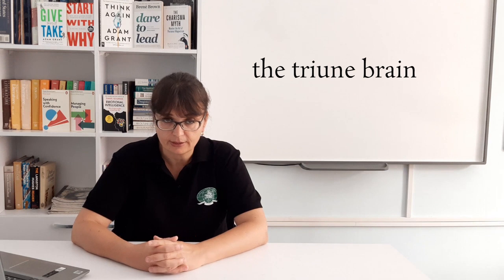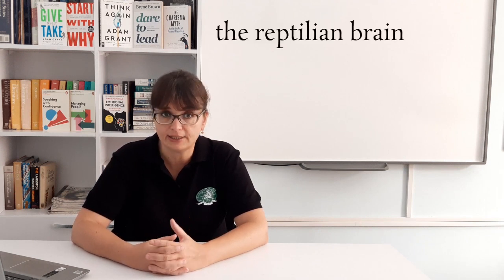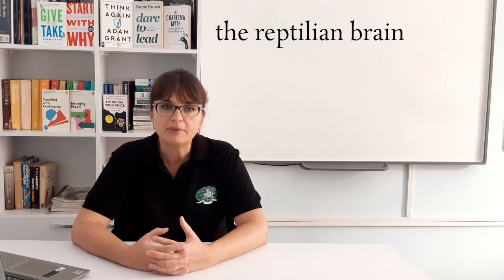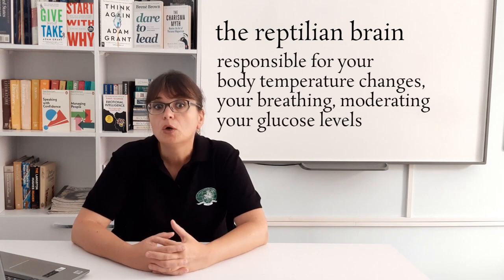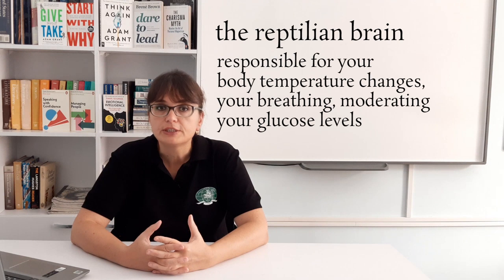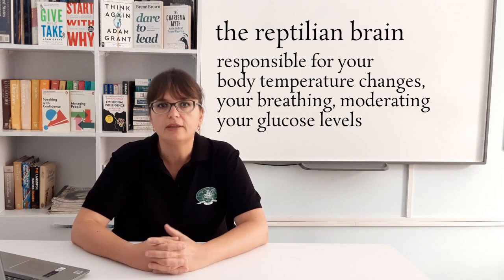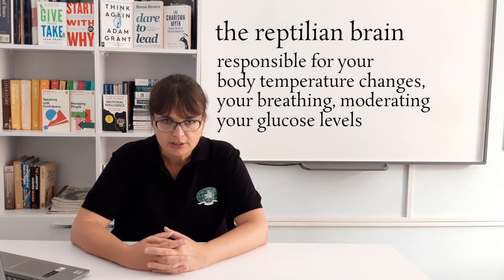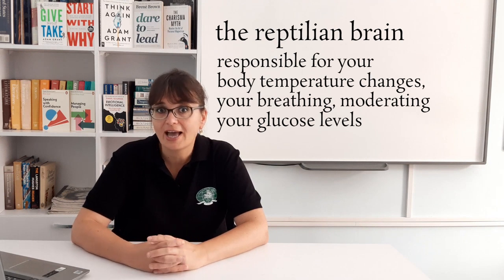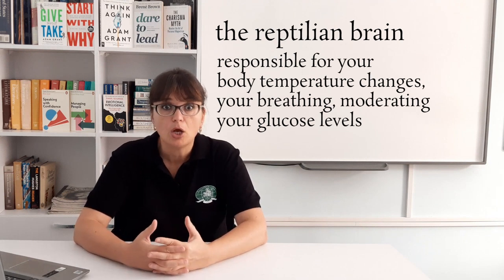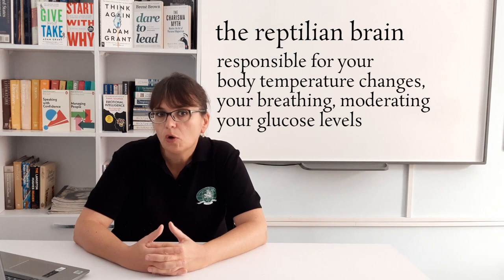I'd like to briefly introduce the notion of the triune brain to clear things up. A commonly accepted way to look at the brain is as consisting of three layers. The most ancient is the reptilian brain. This is what makes you function on autopilot — it's responsible for your body temperature, breathing, moderating your glucose level, and all those vital functions that happen daily in your body without you actually knowing it.